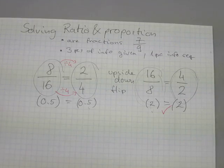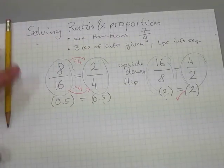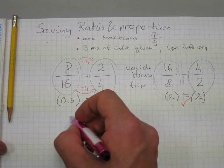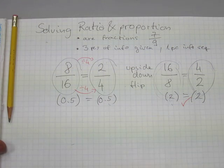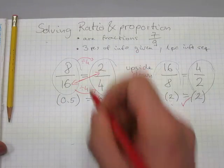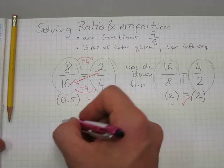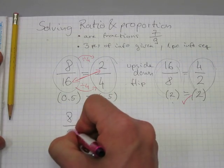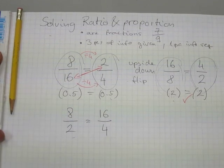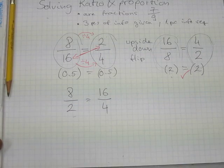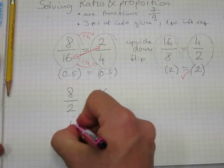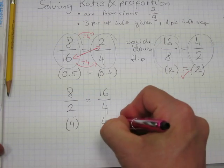We can do two more interesting switches. The 2 and 16 can trade places, and when they do, we get: 8 divided by 2 equals 16 divided by 4. Let's see if this equation really works. 8 divided by 2 is 4.